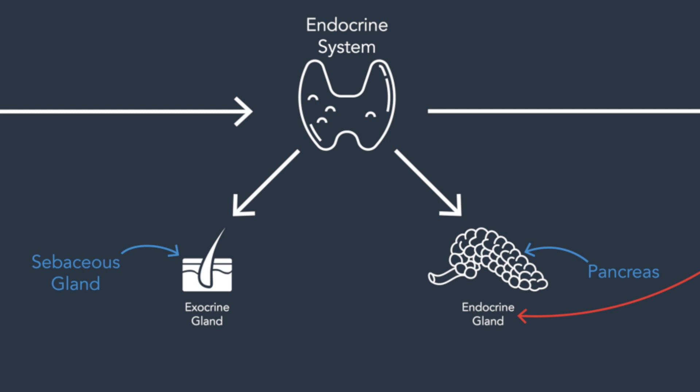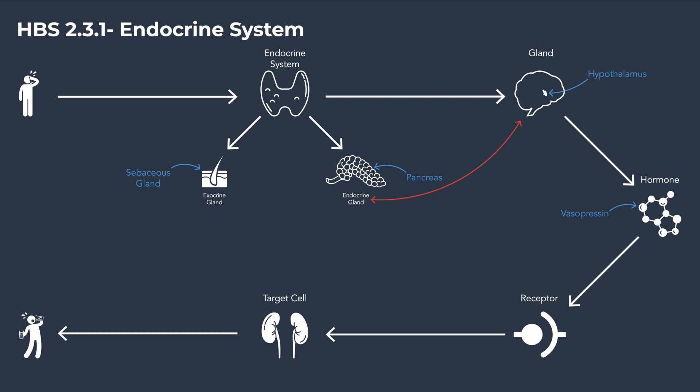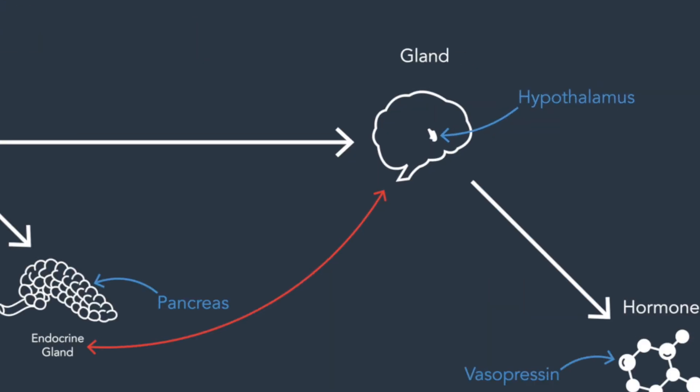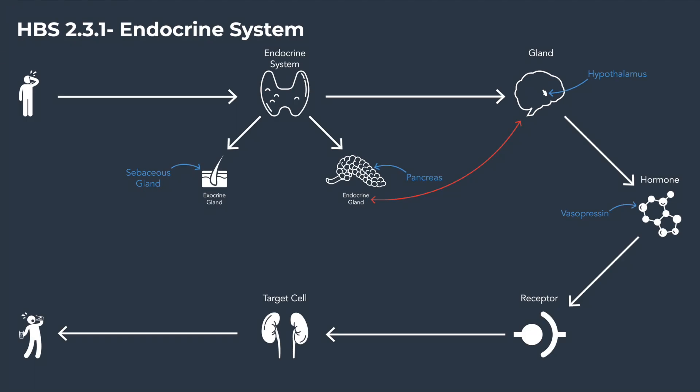Technically, the pancreas is also an exocrine gland because it can release digestive enzymes into your intestines, which is technically part of the outside world, but that's not what we're talking about right now. In my example for controlling the hydrostatic balance in the body, the gland that is part of this process is the hypothalamus. The hypothalamus is going to receive some information from the nervous system and start the endocrine system's response to this low hydrostatic pressure. My orange arrow here is just pointing out that the hypothalamus is an endocrine gland.